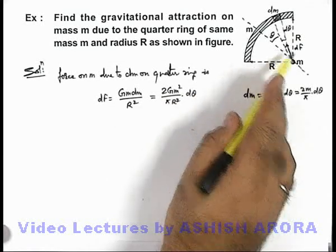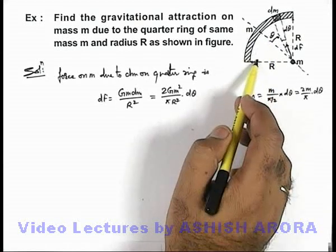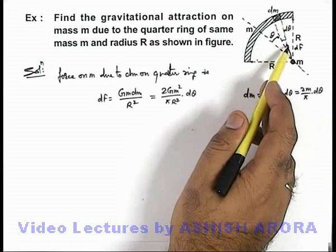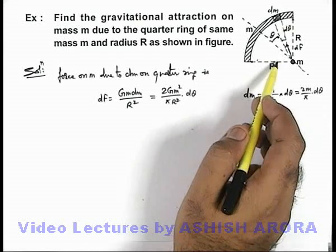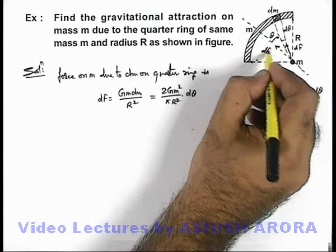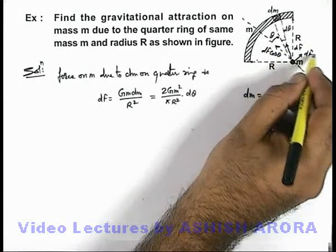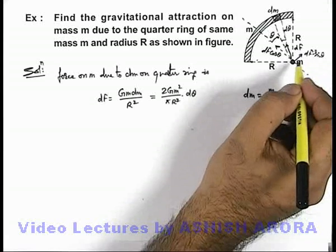And this dF which is acting on m, when we integrate it within limits from -π/4 to +π/4, the direction of dF is changing. So we take two normal components of dF: one will be dF cos θ along this bisector and other is dF sin θ which is perpendicular to the bisector.